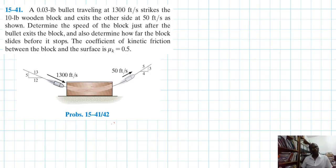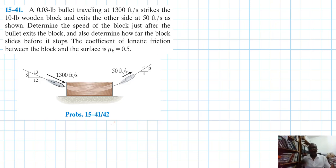Hello, I welcome you all. The problem reads: a bullet traveling at 1300 feet per second strikes a 10-pound wooden block and exits the other side at 50 feet per second, as shown. Determine the speed of the block just after the bullet exits, and also determine how far the block slides before it stops. The coefficient of kinetic friction between the block and the surface is 0.5. This problem comes from Engineering Mechanics and Dynamics, 14th edition by Hibbeler.